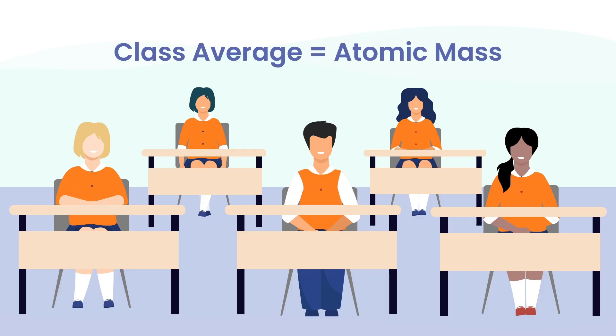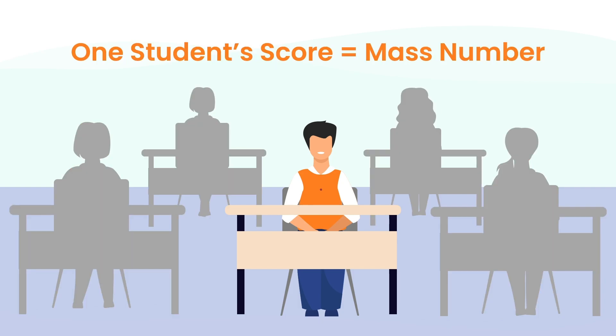So think of it this way: atomic mass is like the class average, while mass number is the score of one specific student—one isotope.